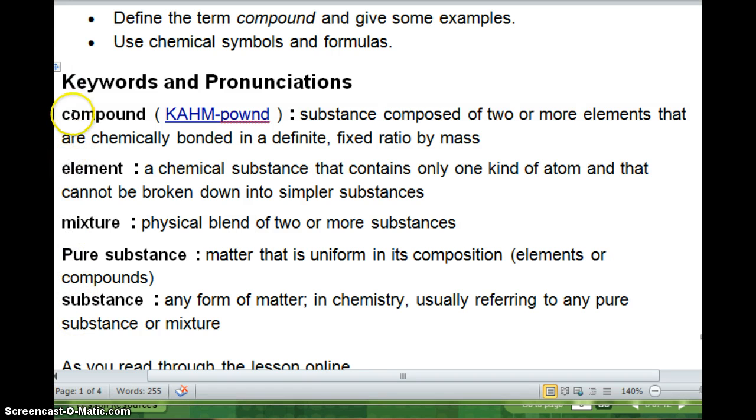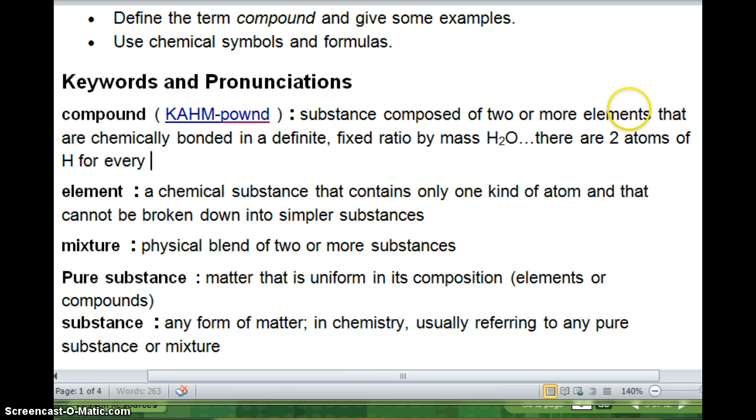When we talked about pure substances, I said that it's either an element or a compound. So an element is a chemical substance that contains only one kind of atom and that cannot be broken down into simpler substances. If you have an atom of gold, that's it. You cannot change that atom of gold into silver, into oxygen, without nuclear reactions, which we're going to talk about next semester. But for now, basically stick with elements cannot be broken down chemically or physically. Compound is a substance composed of two or more elements that are chemically bonded in a definite fixed ratio by mass. So in other words, we have H2O. And when they say that definite fixed ratio, that little two means something. It means there are two atoms of hydrogen for every one atom of oxygen. And that's why it's H2O. That's what we mean by that fixed ratio.